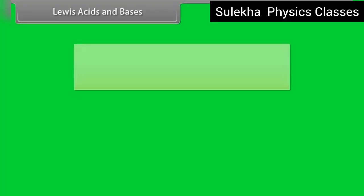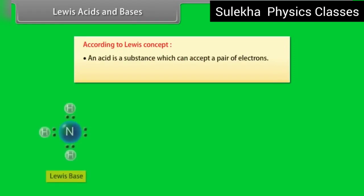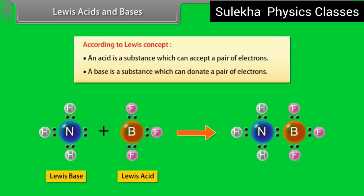Lewis acids and bases: according to Lewis concept, an acid is a substance which can accept a pair of electrons. A base is a substance which can donate a pair of electrons. For example, in the reaction, BF3 acts as the Lewis acid.